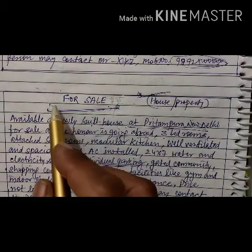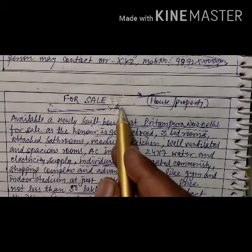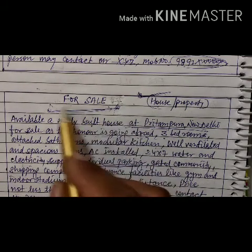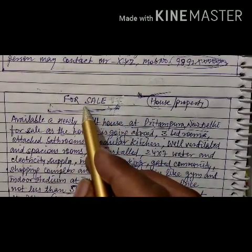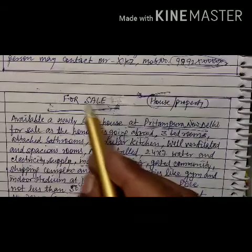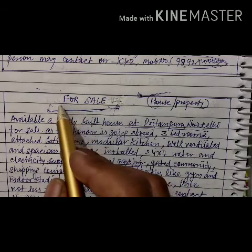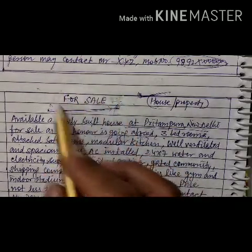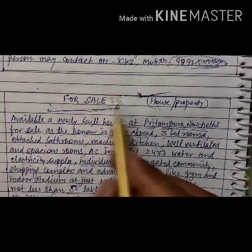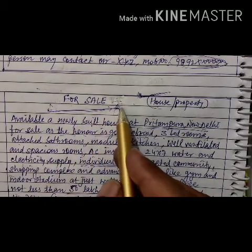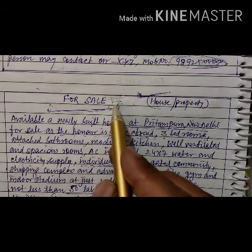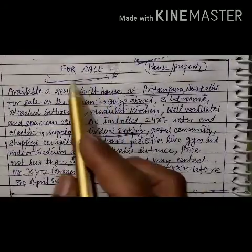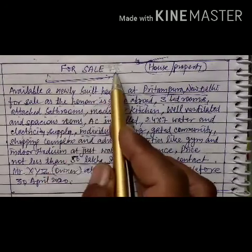Hello dear students. Yesterday we learnt about classified advertisements and the different titles under which they are published. The first one was 'For Sale' — if you want to sell any property like a house, plot, or household items including furniture, you can give it wide publicity by getting it published under the classified advertisement column in the newspaper.